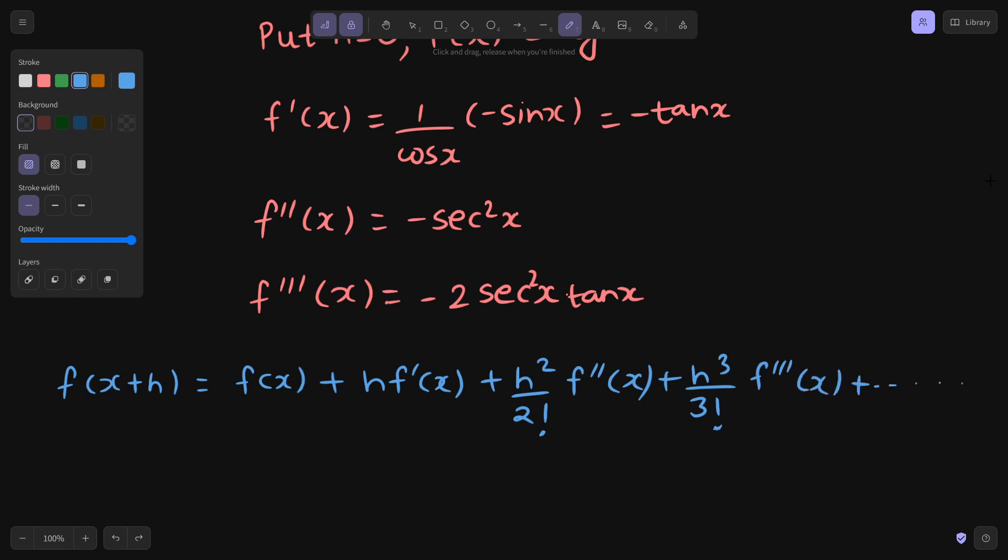So what is f(x+h)? That is log cos(x+h). And we will write that. What is f(x)? Your f(x) is log cos(x) plus h times, what is the first derivative? It is negative of tan(x).